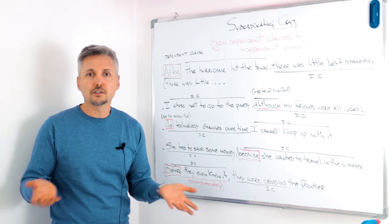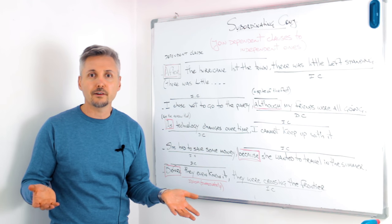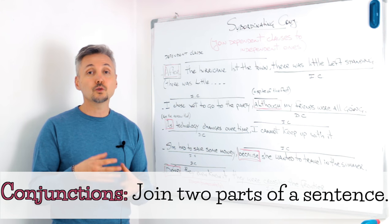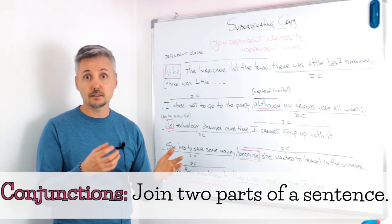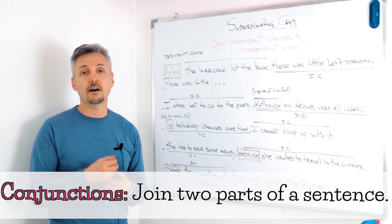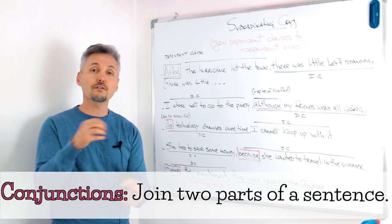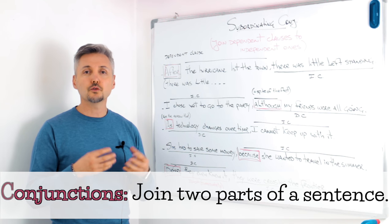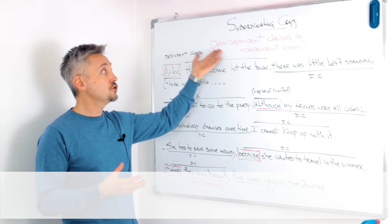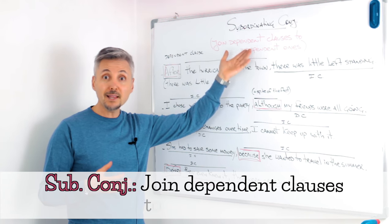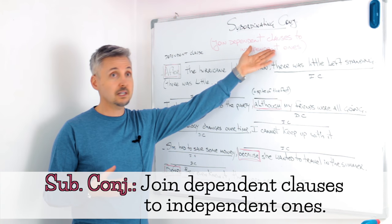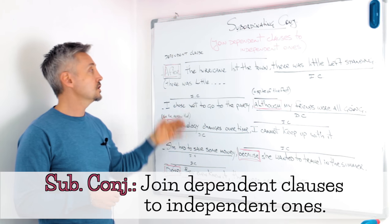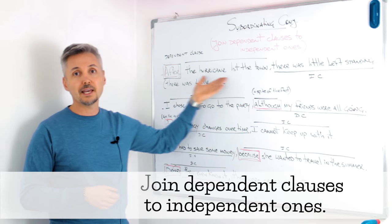But what are conjunctions, in general? They are words that join two parts of a sentence, or a phrase to a phrase, to make a sentence together. Subordinating conjunctions join dependent clauses to independent ones — just like my examples.